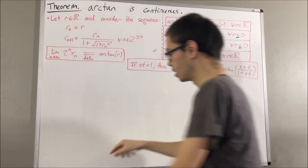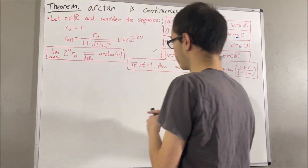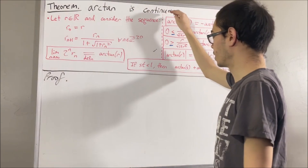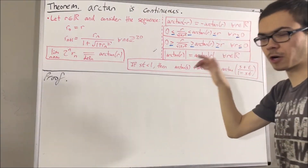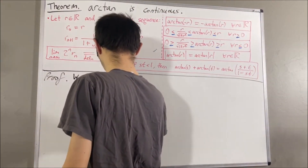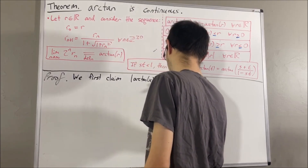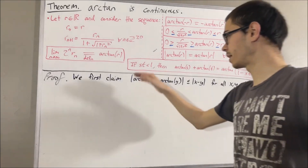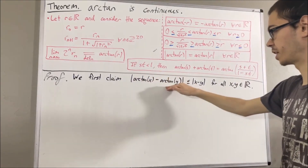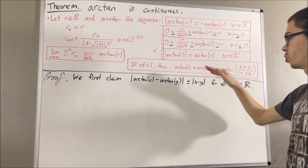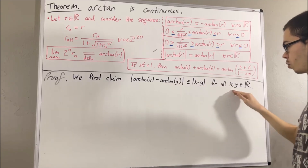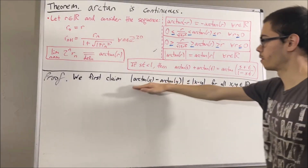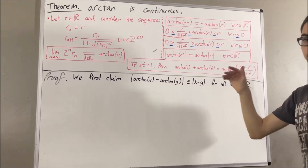Now let's get into proving this theorem. To prove the arctangent function is continuous, it would be really nice to first prove the following claim: the absolute value of arctangent of x minus arctangent of y is less than or equal to the absolute value of x minus y, for all real numbers x and y. It turns out, continuity will immediately follow from this.